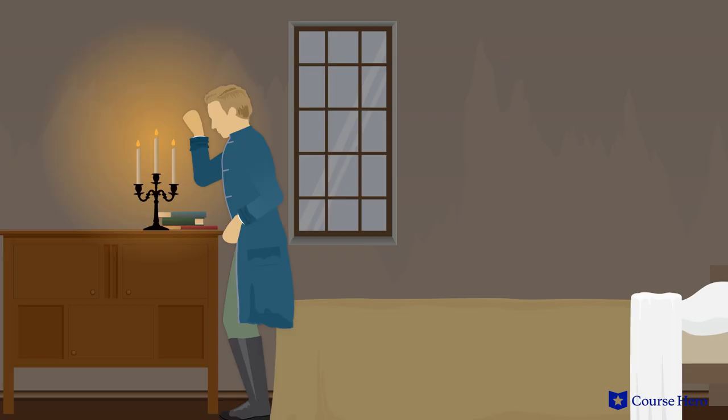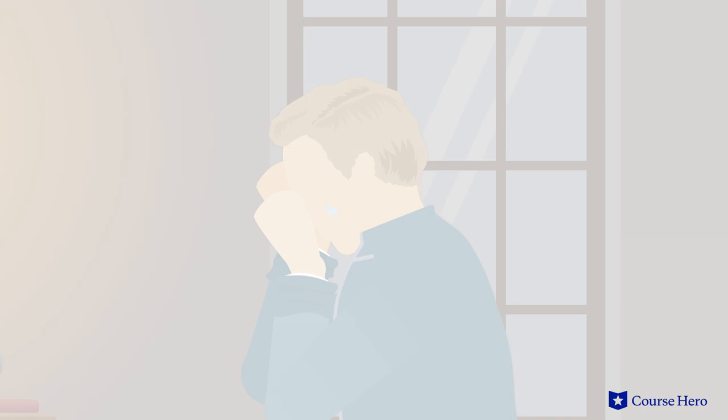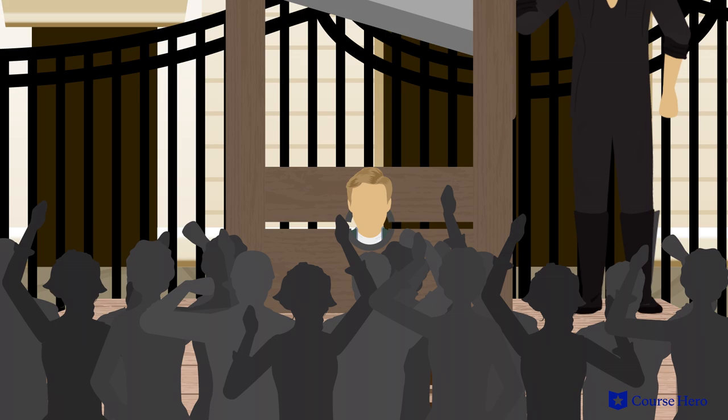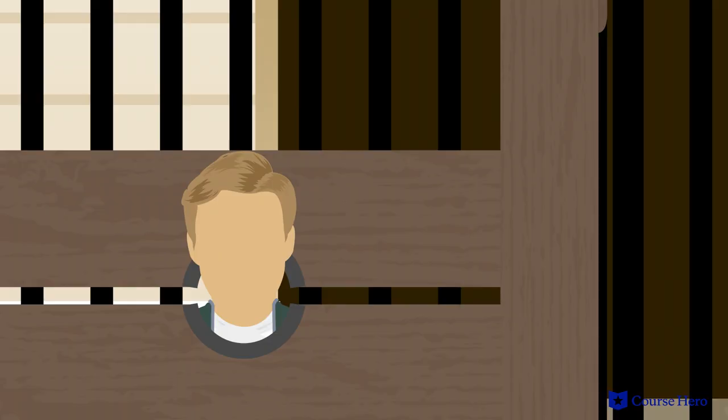Carton's depression and low self-esteem turn around and he changes his life for the better. His love for Lucie is so strong that he vows to do anything for those she loves so she can have a good life. In the end, he sacrifices his life to save Darnay from the guillotine.